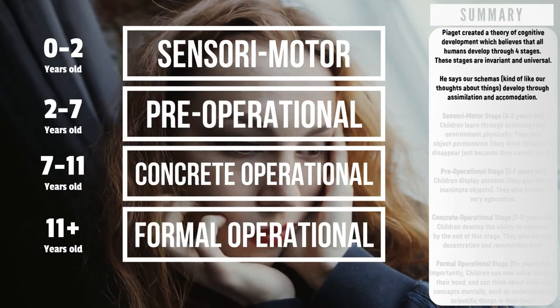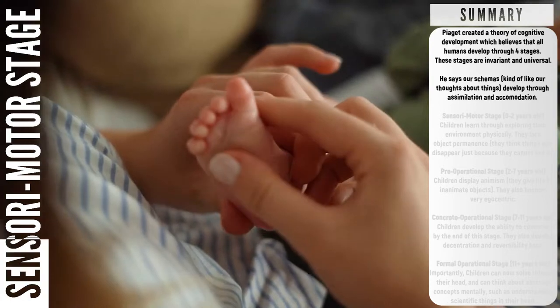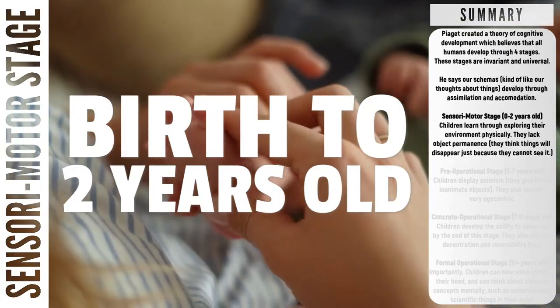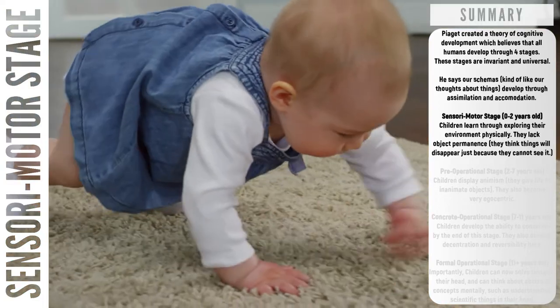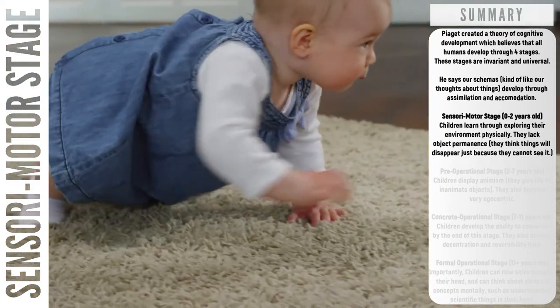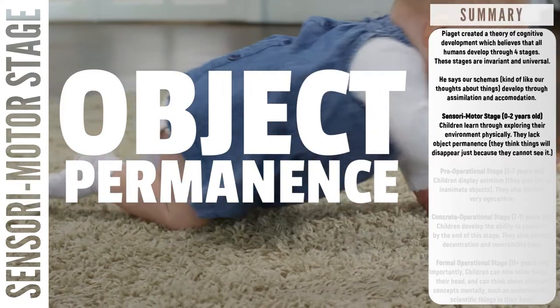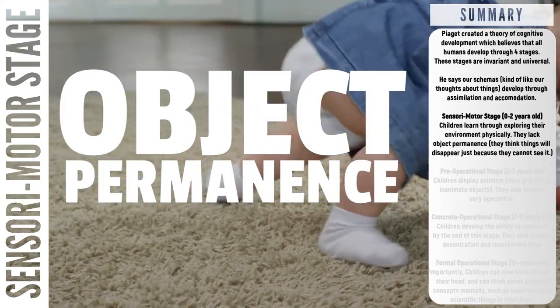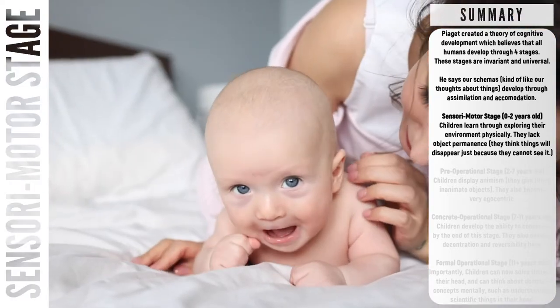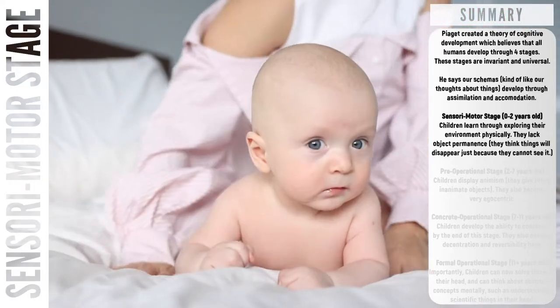It all starts off with the sensory motor stage. The sensory motor stage is the first stage of development. It goes from birth to two years old. In this stage, children learn about their environment physically. The main key term linked to this stage is object permanence. This simply means that when you hide an object from a child, they are unable to understand that the object is still there.